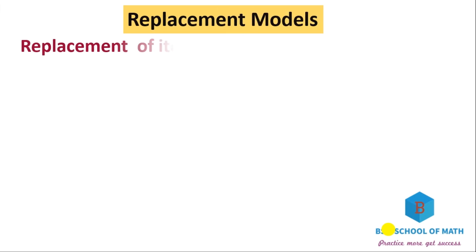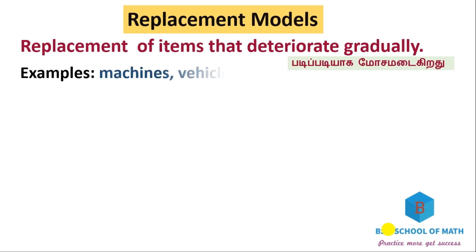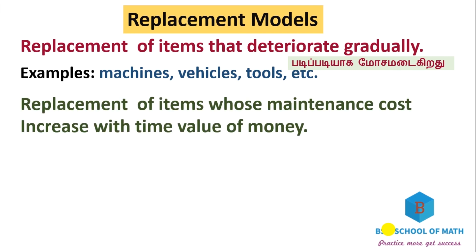So the replacement model: the first method covers missions, vehicles, tools, etc. In this method, the value either increases or decreases, and we determine when replacement is necessary.